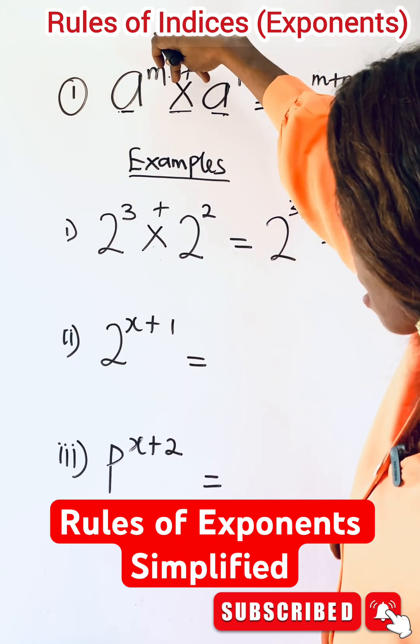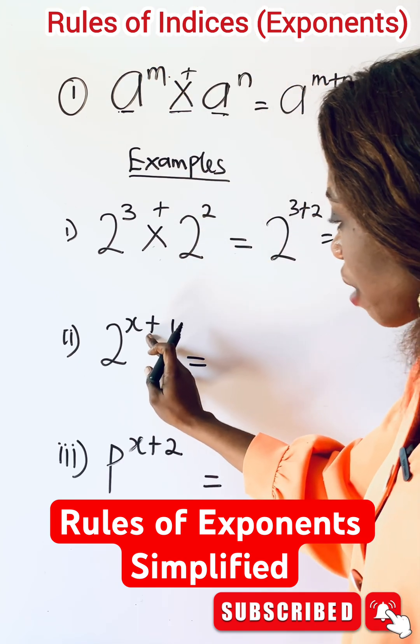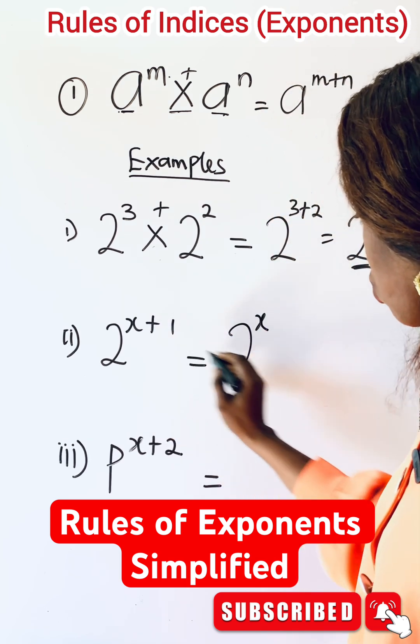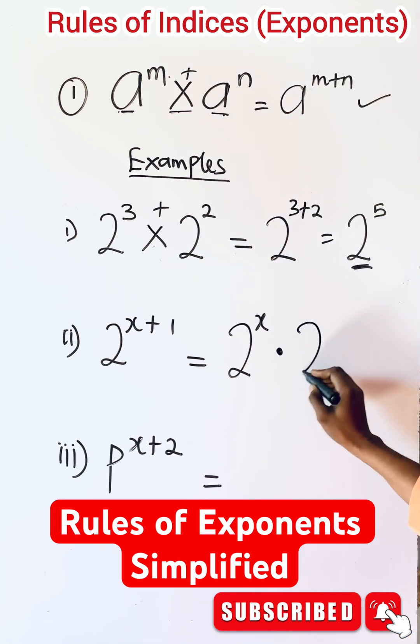For this, we want to reverse it. So to reverse this, remember the addition we turn to multiplication. So you have two raised to power x, this will now be multiplying two raised to power of one, and this will give you two raised to power x multiplying two.